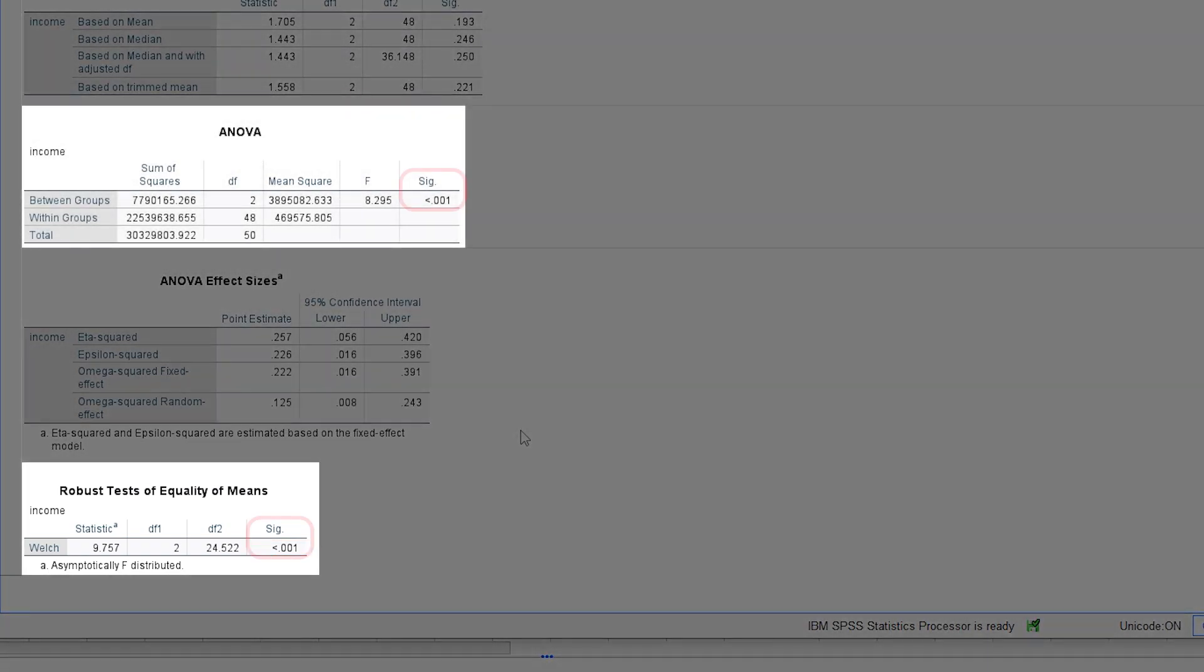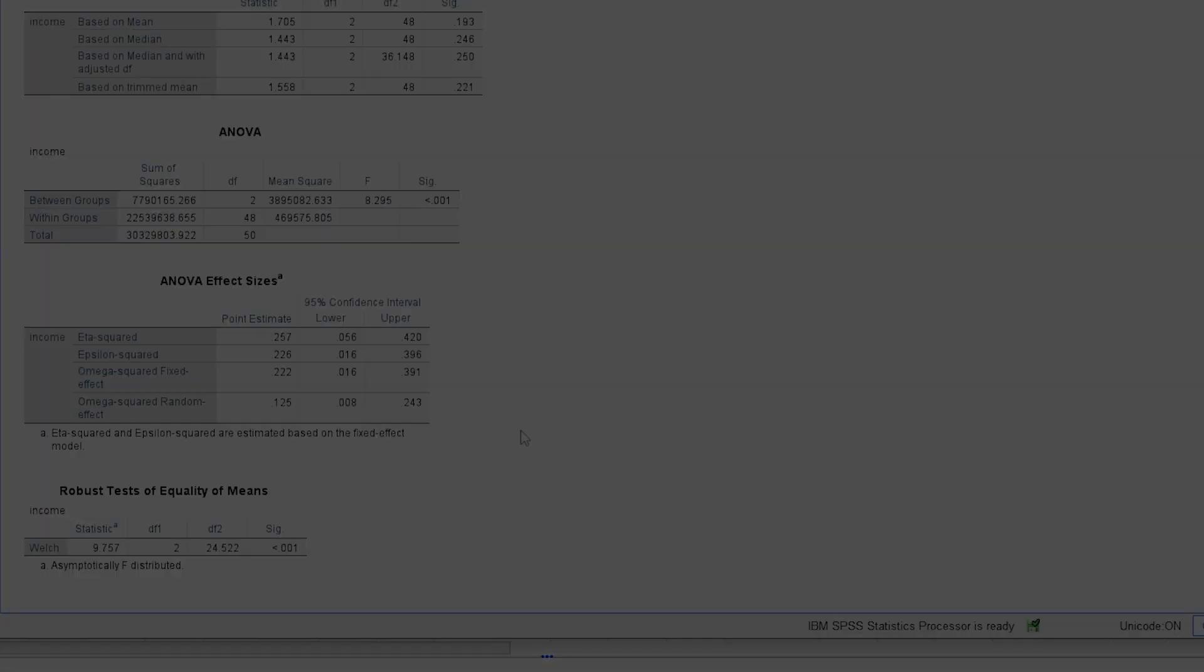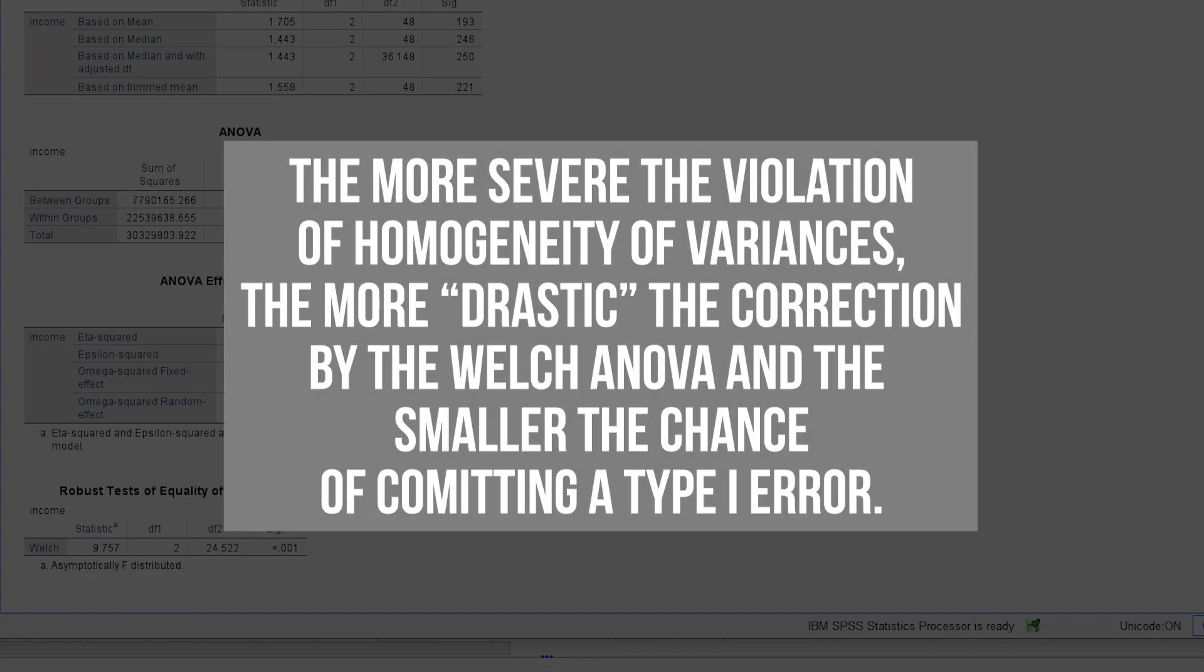Finally, we can compare the p-values of the ordinary one-way ANOVA and the Welch ANOVA and can spot only marginal differences. The more severe the violations, the more drastic differences become and the higher chances of committing a type 1 error. See the source in the description for that. Only the robust version corrects for the violation of equal variances, protecting us from a type 1 error.